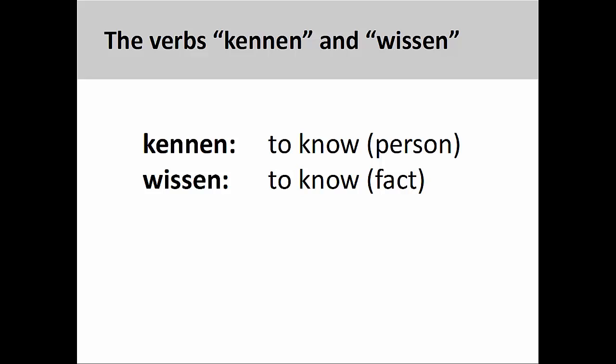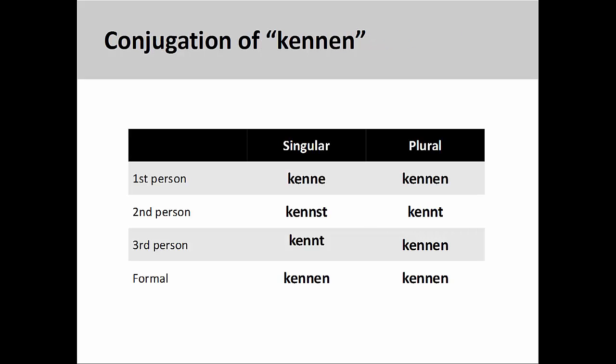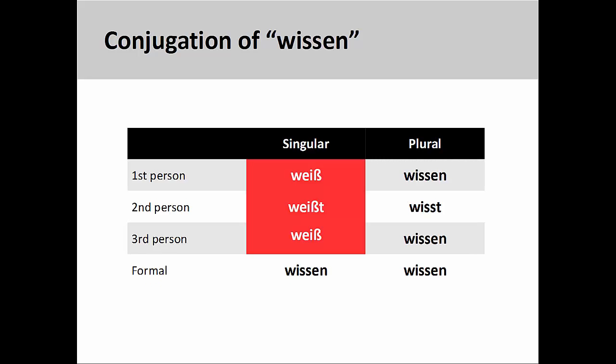Kennen means to know a person, and Wissen means to know a fact. Kennen has a regular conjugation pattern with no stem-vowel changes, whereas Wissen has a stem-vowel change and an unusual conjugation pattern in the first-, second-, and third-person singular.